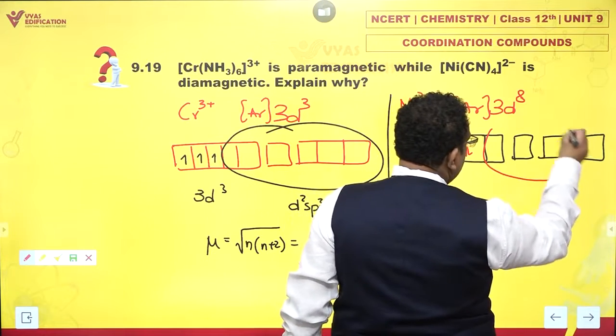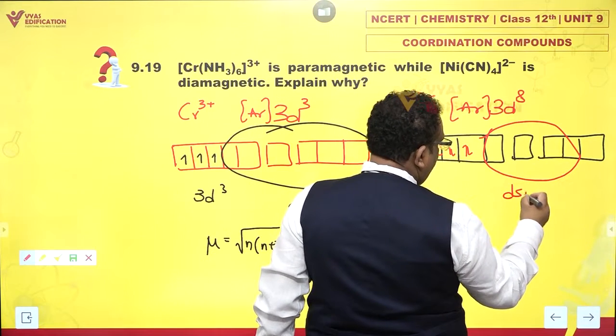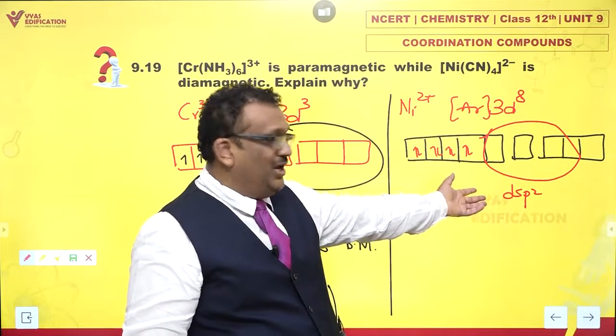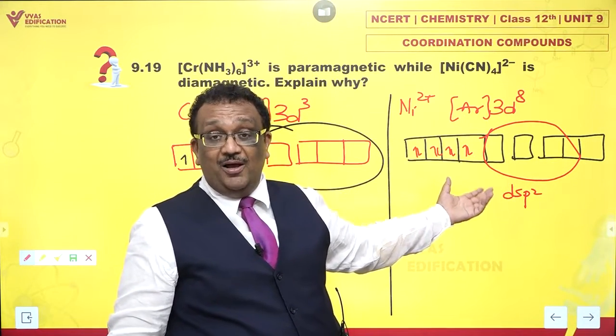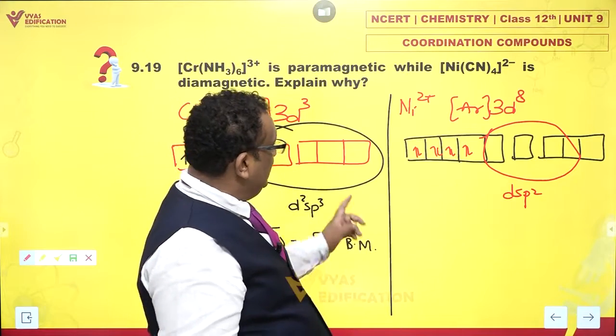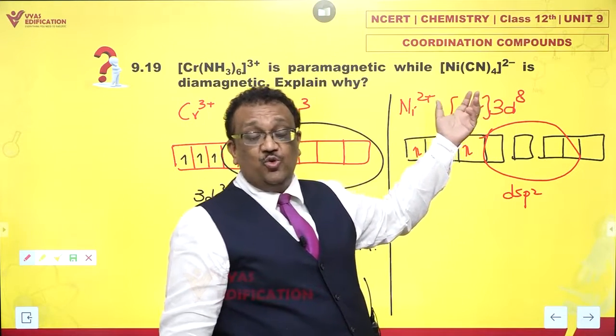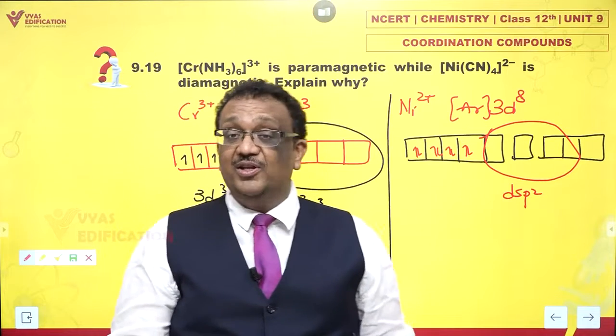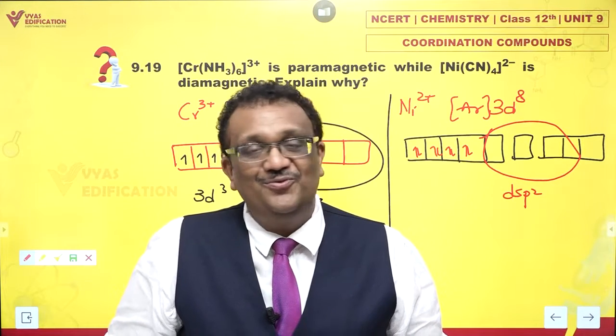I am just left with this dsp². dsp² hybridization. Yes. Square planar geometry. And since cyanide ions, being strong field ligands, can force pairing in d⁸ configuration of nickel, this is what I get.